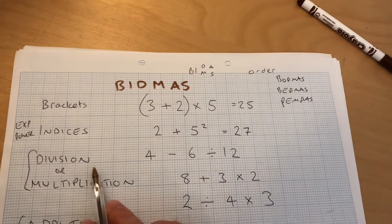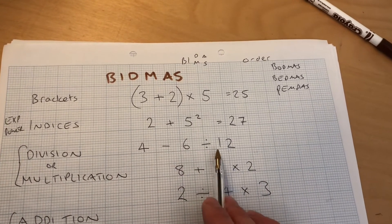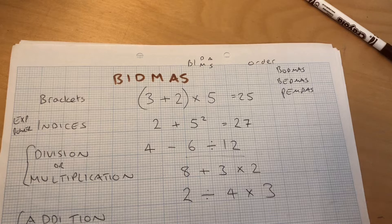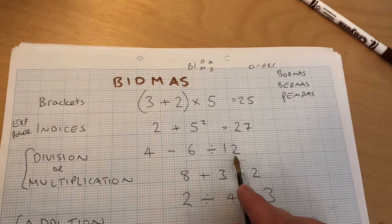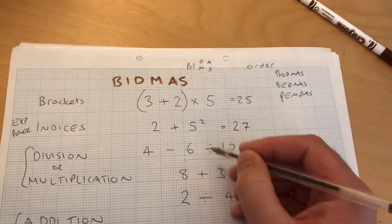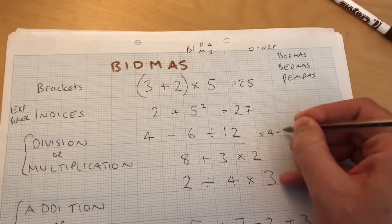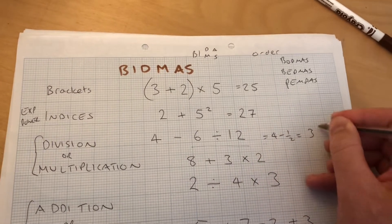Then I get to division. 4 minus 6 divided by 12. So I'm going to do that division first. So 6 divided by 12 is 6 over 12. In fact, that's why they have that symbol like that, almost like a fraction, which is a half, and then 4 minus a half is 3 and a half.